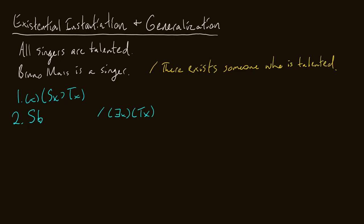Let's start by universally instantiating line one, as we learned in the last video. I want to instantiate to the letter B for Bruno Mars, because that's going to be relevant and helpful. So we instantiate line one to say: if Bruno Mars is a singer, then Bruno Mars is talented. That's line one, universal instantiation. Now I can apply modus ponens from lines two and three, and conclude that Bruno Mars is talented, because it is the case that he is a singer.